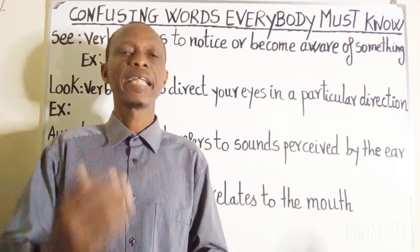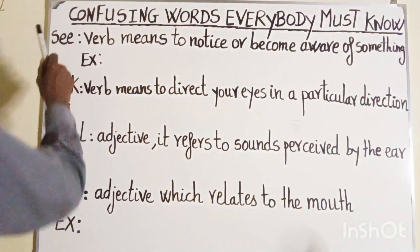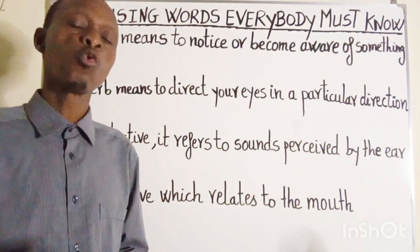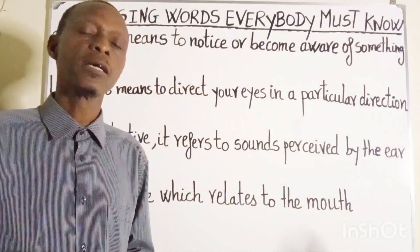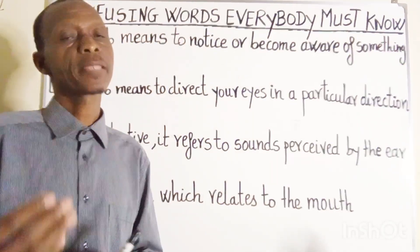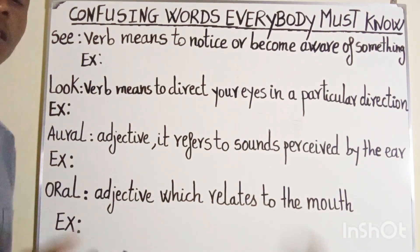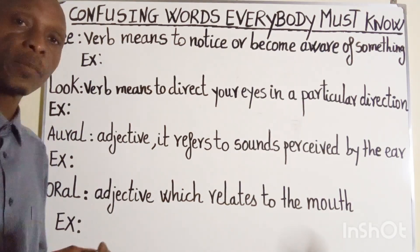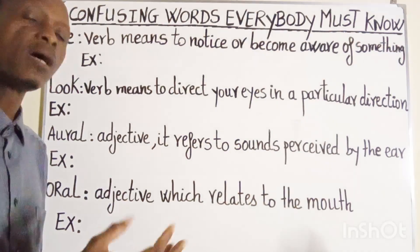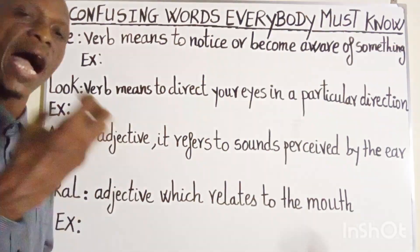Without more ado, let's begin. The words 'see' and 'look' both have to do with perceiving something with your eyes. Let's study them one by one. 'See' is a verb which means to notice something or somebody, or to catch a glimpse of something by using your eyes.